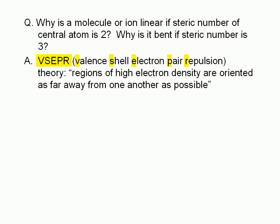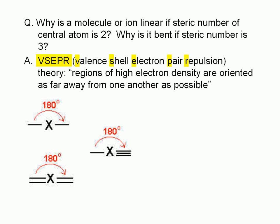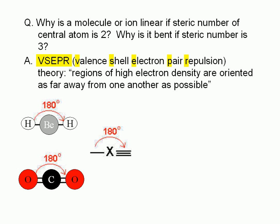Let's examine the possible cases where the steric number is 2. Here we have three possible ways that an atom X can have a steric number of 2. In order for two regions of high electron density to be as far away from each other as possible, they must be oriented 180 degrees apart — sticking out of the atom in completely opposite directions. It can have two single bonds and no lone pair, as in beryllium hydride; two double bonds, as in carbon dioxide; or a single bond and a triple bond, as seen in hydrogen cyanide.